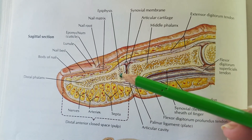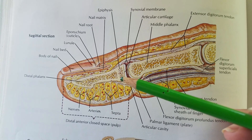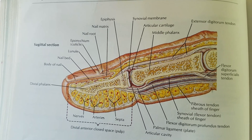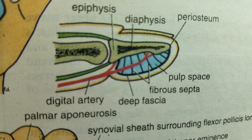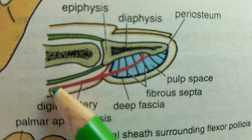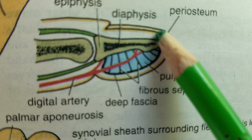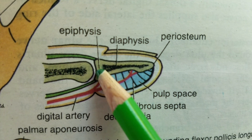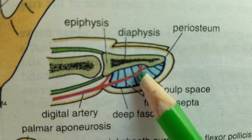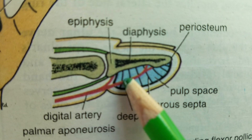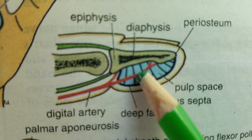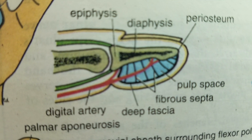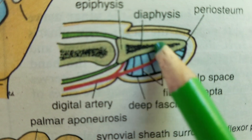The epiphysis is spared because the blood supply to the epiphysis is through another branch which does not pass through the pulp space. As you can see in this diagram, the epiphysis is spared in case of a prolonged infection of the pulp space, but the diaphysis is supplied by a branch of the digital artery, and compression of that would lead to necrosis of the distal part of the diaphysis of the terminal phalanges.